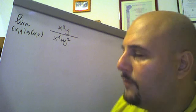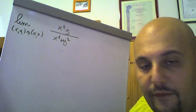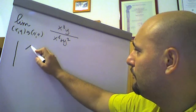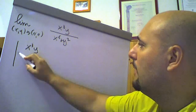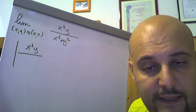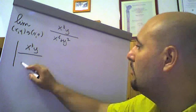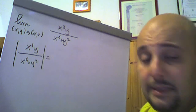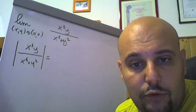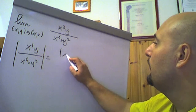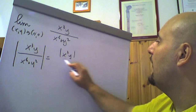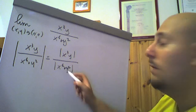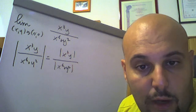We call it the compression theorem. Let's see how to apply it. We consider the function in absolute value. If we consider the function |x³y / (x⁴ + y²)|, we notice that by a basic property of absolute values, the denominator is certainly positive — x⁴ + y² — so we can write this as |x³y| / |x⁴ + y²|, which equals |x³y| / (x⁴ + y²).